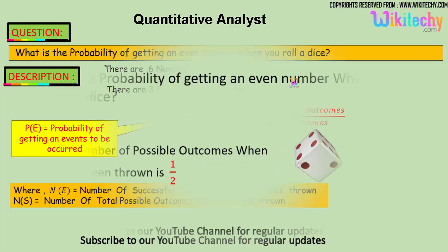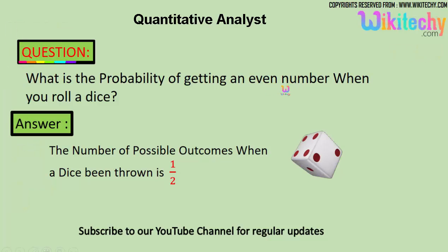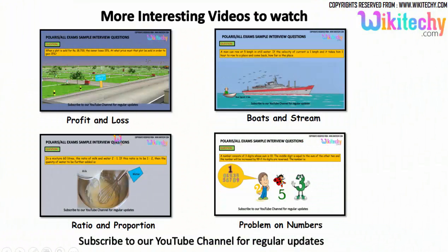The probability of getting an even number when you roll a dice is one by two. That's the answer. We have lots and lots of interesting interview questions for you.